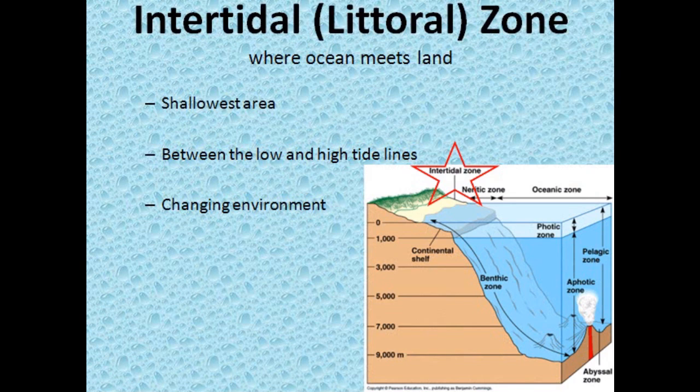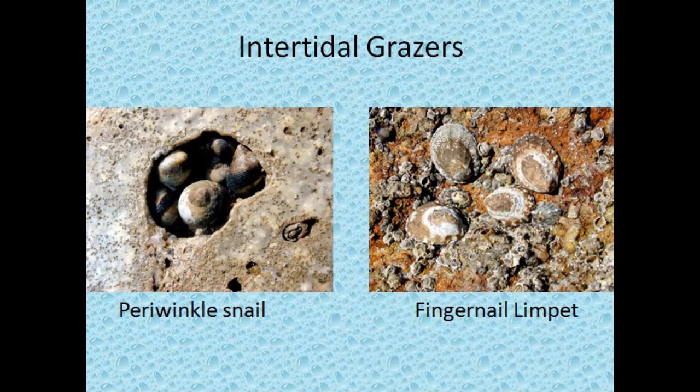The intertidal zone is the shallowest area of the benthic zone and is found between the low and high tide lines. Because it's found in between the tides, the intertidal zone is an always-changing environment.